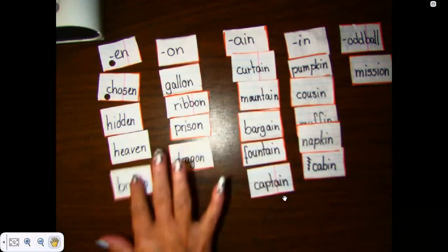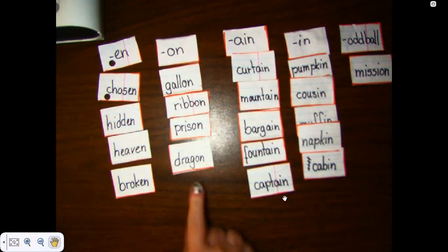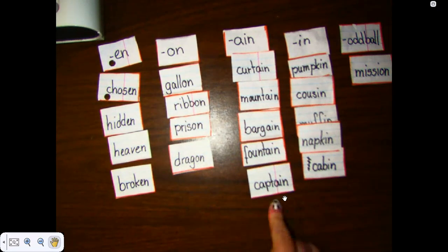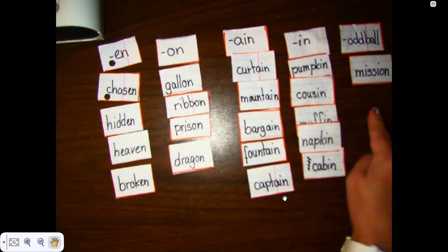Let me straighten these back out. Remember that we have four words in the en column, four words in the o-n column, five in the a-i-n, and five in the i-n, and one oddball.